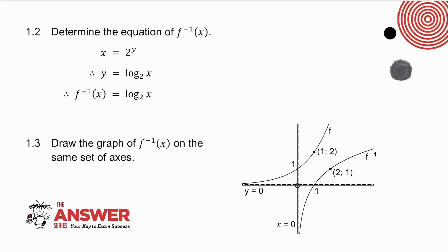To draw the inverse on the same set of axes, notice what happens. The asymptote of y equals 0 becomes x equals 0. The y-intercept of 1 becomes the x-intercept of 1.